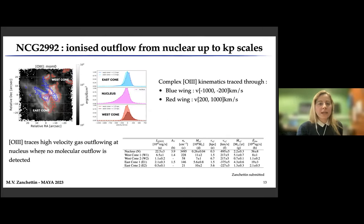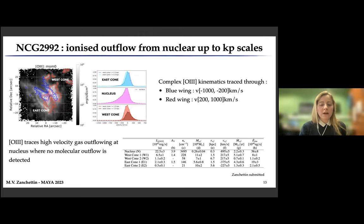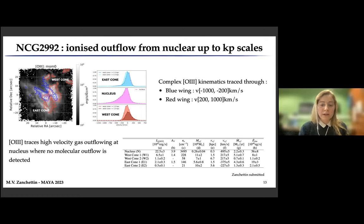For the ionized gas in NGC 2992, we found that the O III emission line traces very complex kinematics. The ionized gas shows blue and red wings in all these regions, and also the presence of two very wide-angle ionized cones. We found evidence of gas outflowing both on nuclear and kiloparsec scales, with velocities exceeding 1000 km/s in the nuclear region.